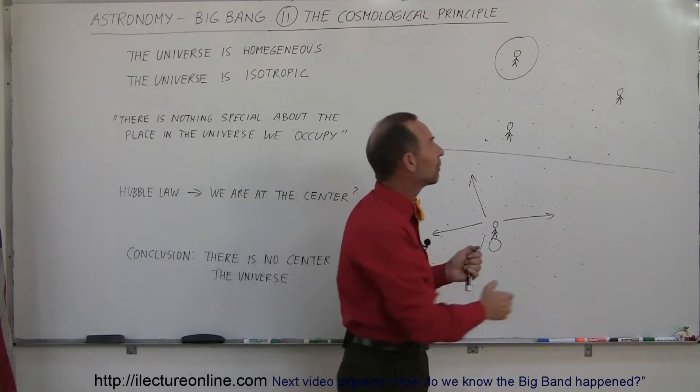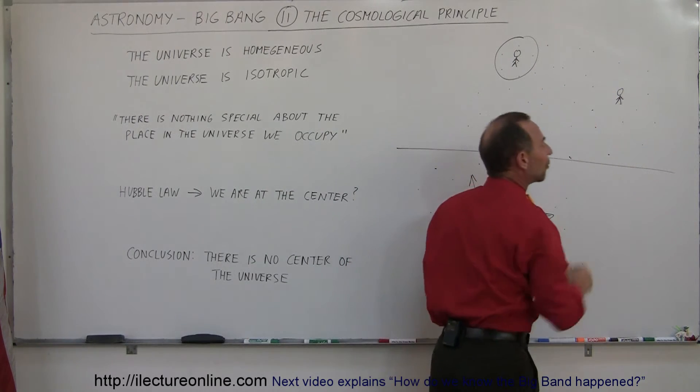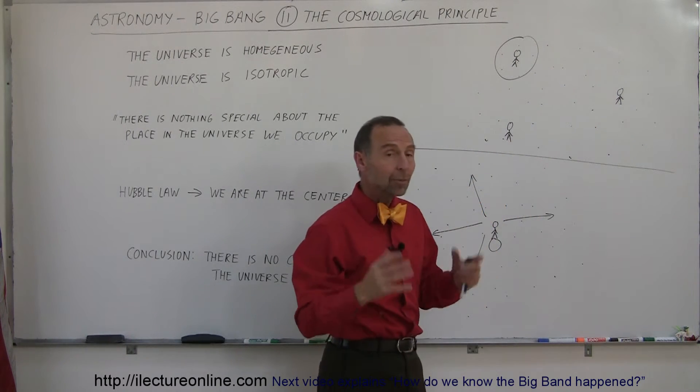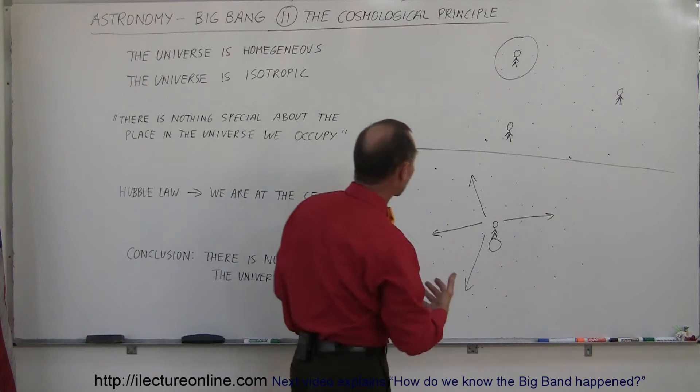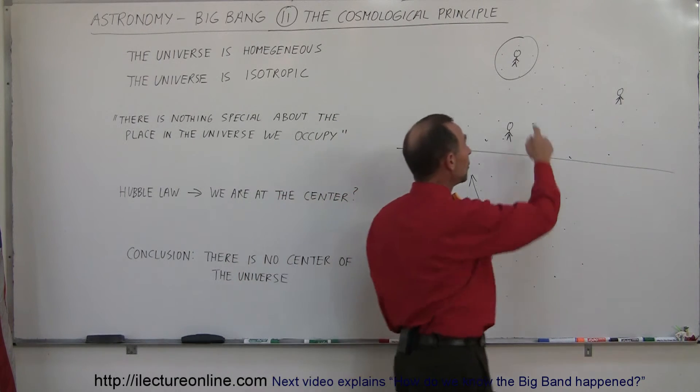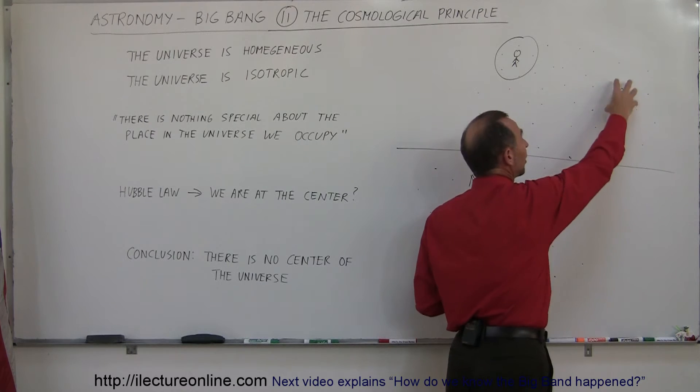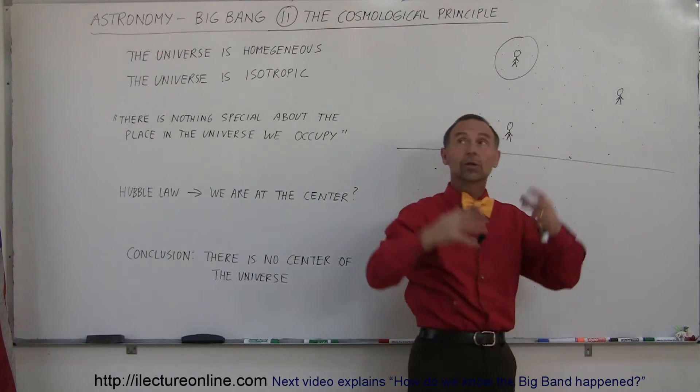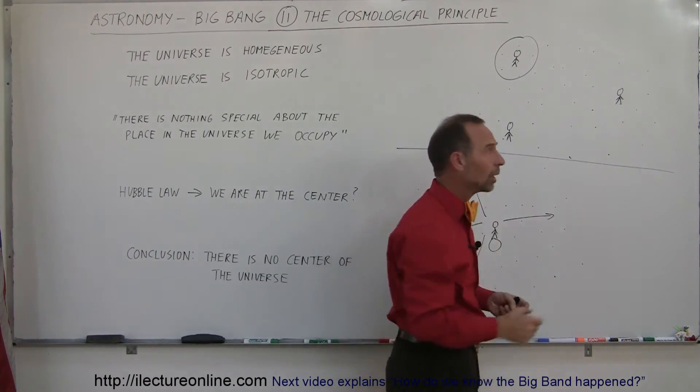Would that be the same if we lived somewhere else in the universe, billions of light years away? And the concept was, because we thought that the universe was homogeneous, which means that no matter where in the universe you might live, somewhere else, billions of light years away, you look around and you say, the universe looks about the same everywhere here as well.